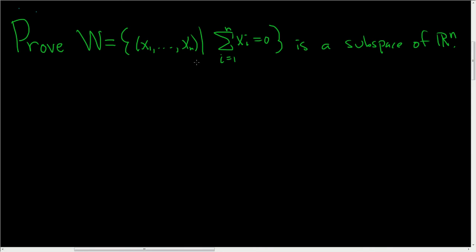So we have a set W. This is actually a subset of R^n, and we're asked to prove it's a subspace of R^n. So recall that W is a subspace of a vector space V if we have three conditions. The first condition is that W is non-empty, so there has to be something in there. There has to be a vector in W.